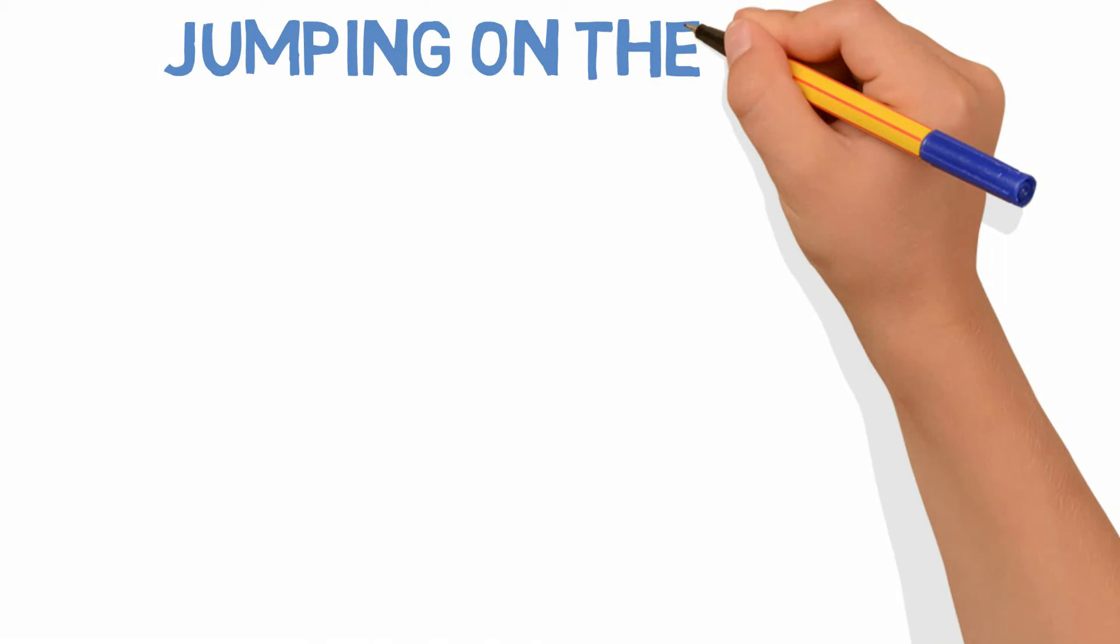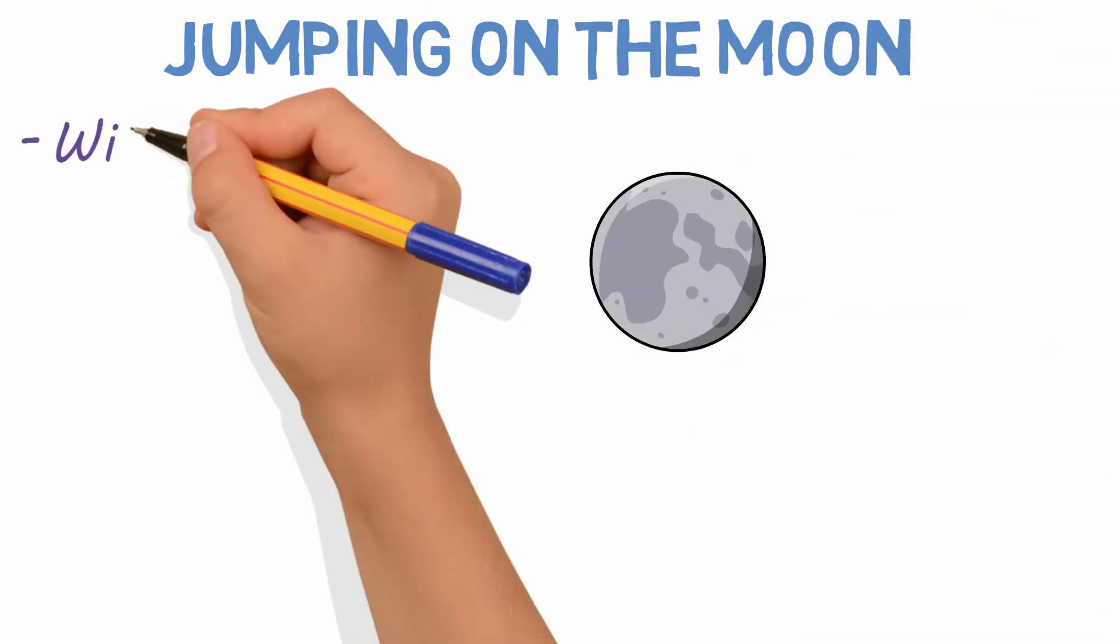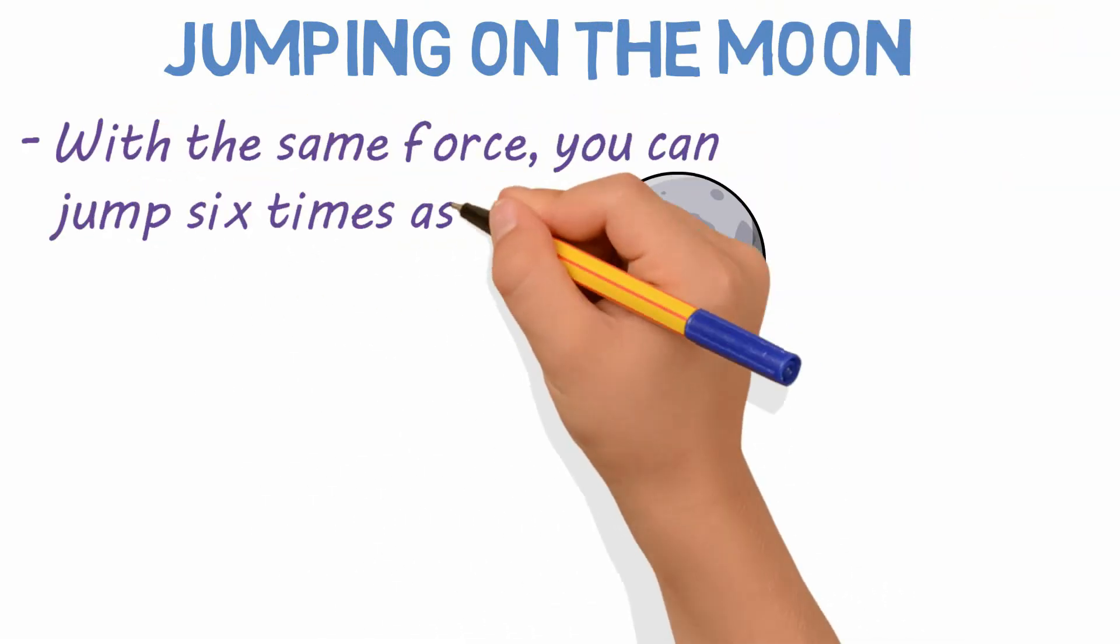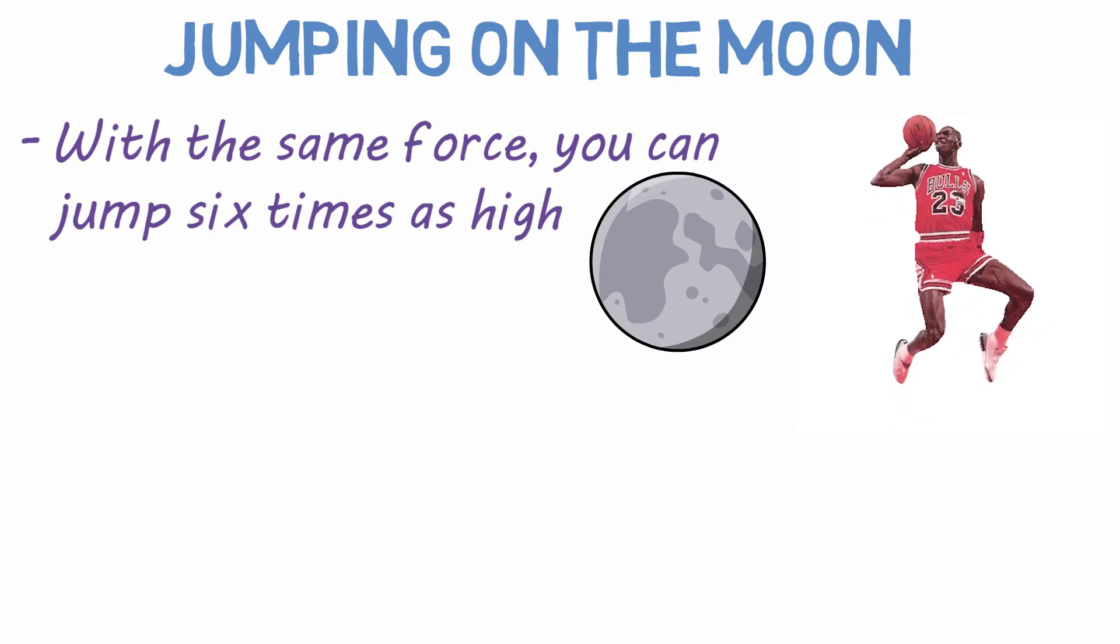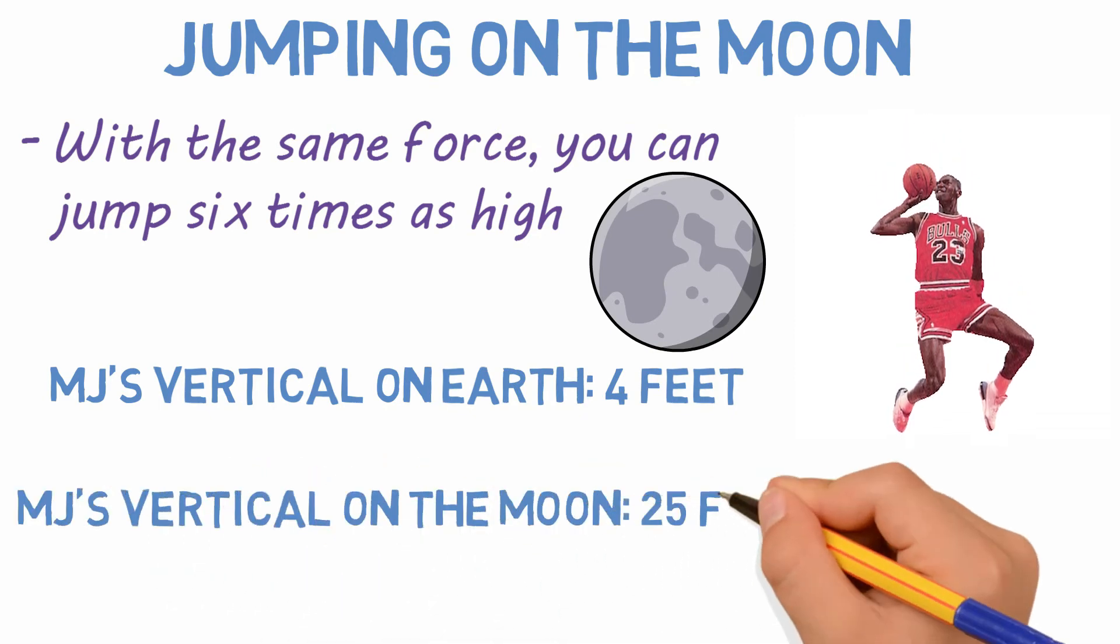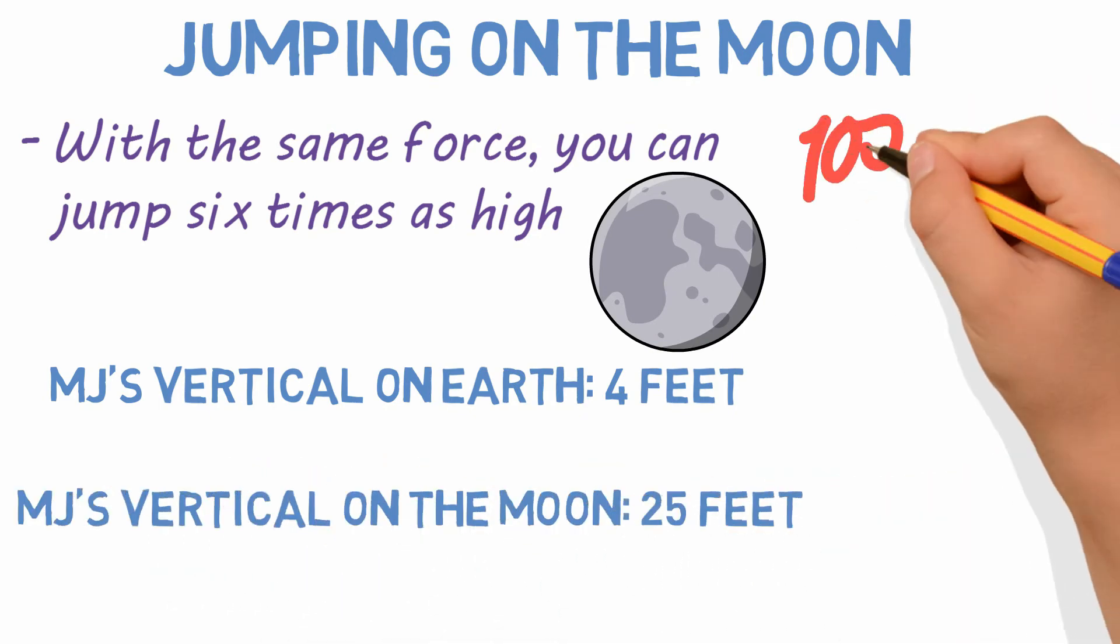This is also why you can jump so high on the moon. With the same force, you can jump six times as high. Michael Jordan had a vertical jump of 46 inches, which is nearly four feet. On the moon, he could jump nearly 25 feet into the air. Incredible.